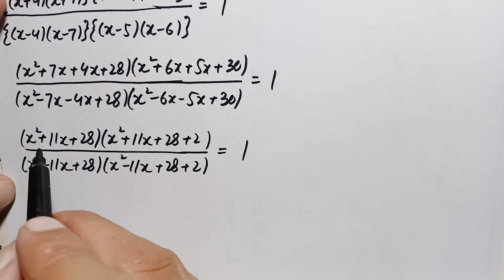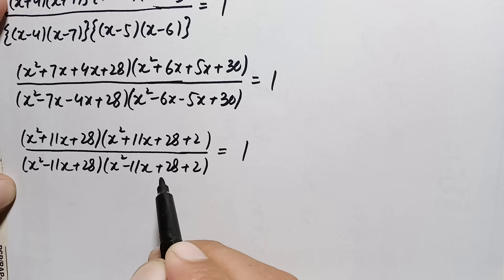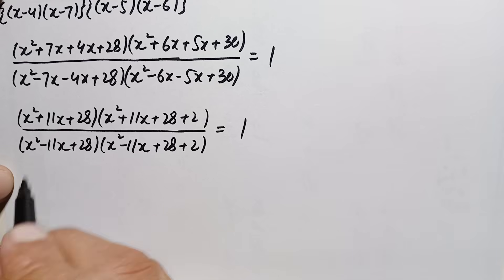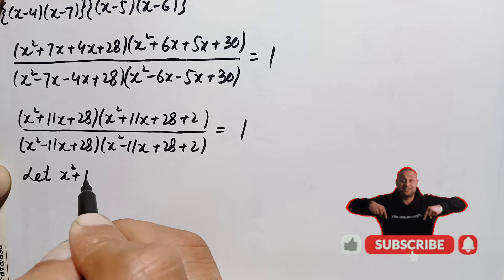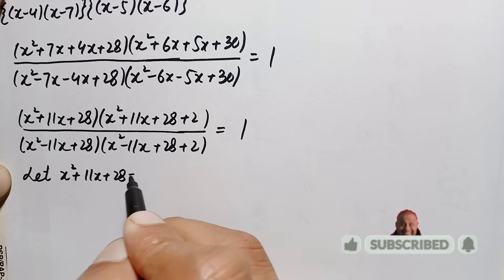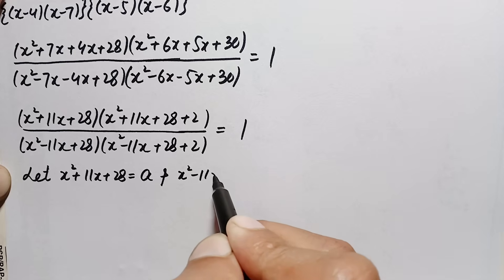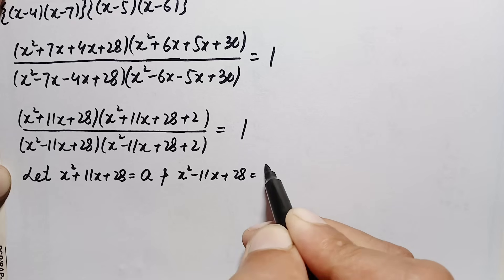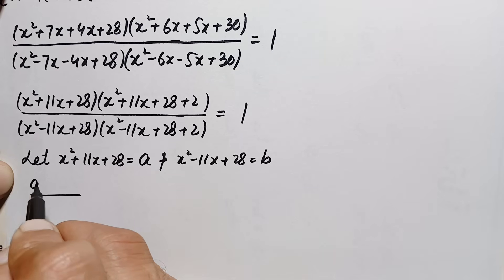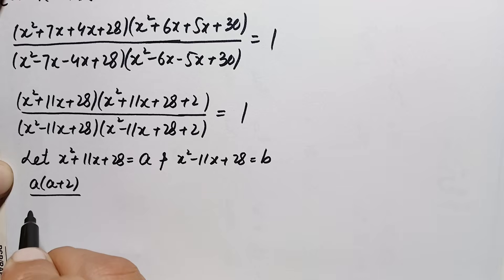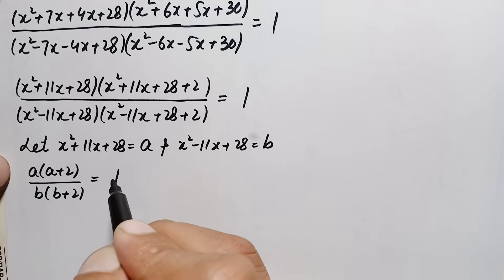Looking at the numerator and denominator, the expression (x² + 11x + 28) appears in both numerator terms, and (x² - 11x + 28) appears in both denominator terms. So we make a substitution: let a = x² + 11x + 28 and b = x² - 11x + 28. The equation then becomes a(a+2) divided by b(b+2) equals 1.